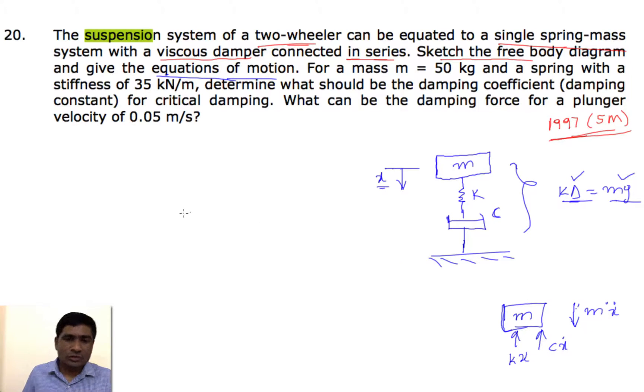If I write the equation of motion, this is exactly the same one which we already seen. So m into x double dot equals f, but here x double dot is in the downward direction and the f in the upward direction, so we will get the negative sign for the spring force as well as for the damping force. This is the standard equation.